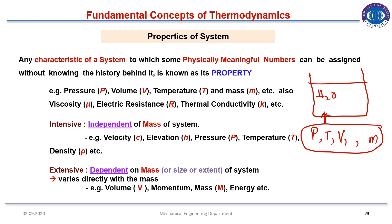Properties are classified into two basic types: intensive properties and extensive properties. Intensive properties are independent of the mass of the system — e.g., velocity, pressure, temperature, density. Extensive properties depend on the mass or size or extent of the system and vary directly with mass — e.g., volume, momentum, mass, and energy.